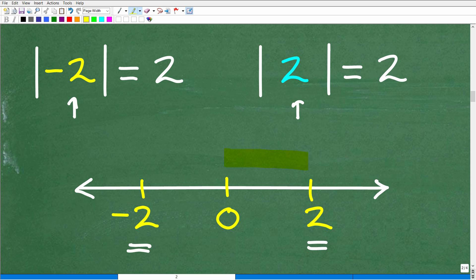So you're like, okay, I'll just go ahead and measure this out. 1, that's 2 units away from 0. That's 2. Okay, so 2 is 2 units away from 0.